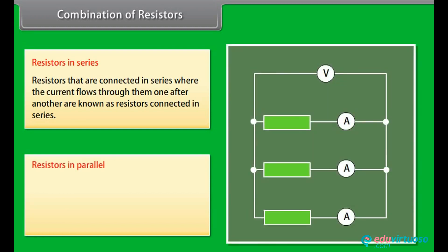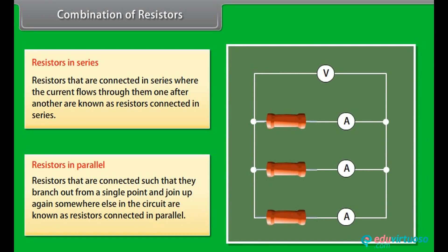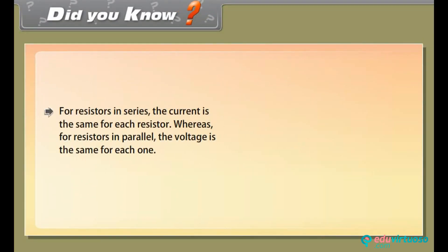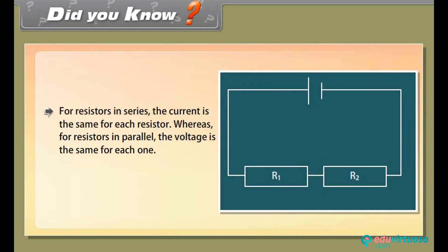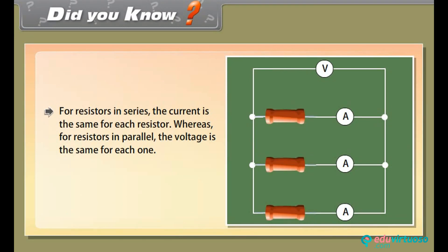Resistors connected such that they branch out from a single point and join up again somewhere else in the circuit are known as resistors in parallel. Here, the current through each component is the same as if it were the only component present, so the total current flowing through the battery is the sum of the currents flowing through each branch. Did you know? For resistors in series, the current is the same for each resistor, whereas for resistors in parallel, the voltage is the same for each one.